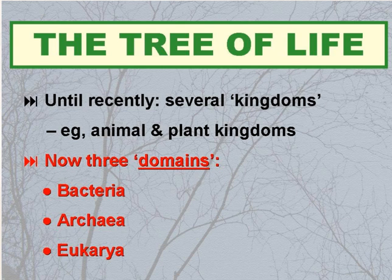Until fairly recently, we divided life into kingdoms — for example, the plant and animal kingdoms, with which I guess you're familiar. However, evolutionary biologists now consider life in three domains: the Bacteria, the Archaea, and the Eukarya, all with capital initial letters.